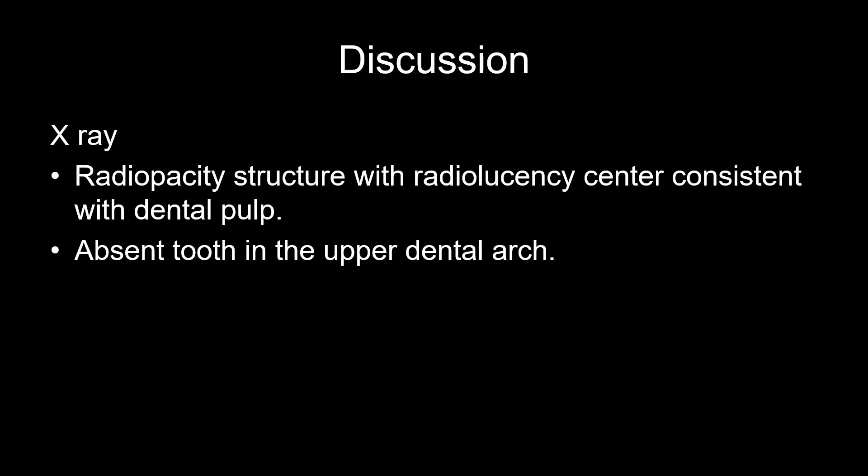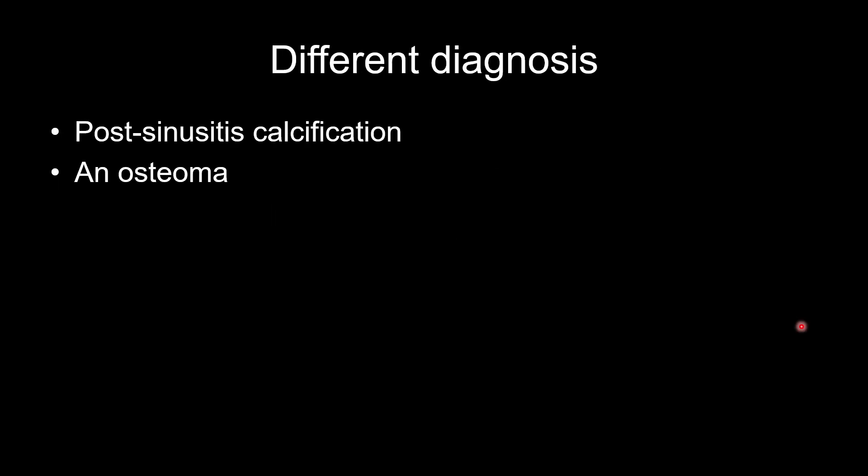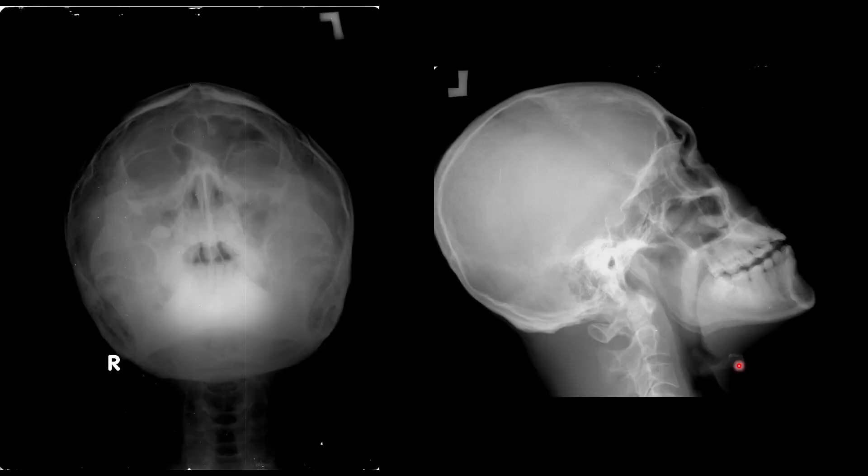In X-rays, we can see the radiopacity structure with radiolucency center consistent with the dental pulp. And we can see an absent tooth in the upper dental arch. The differential diagnoses are post-sinusitis calcification and osteoma. And the conclusion: this is a beautiful case of ectopic tooth in the right maxillary sinus.